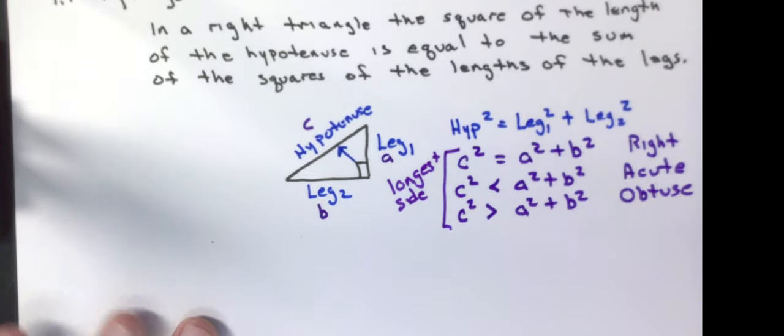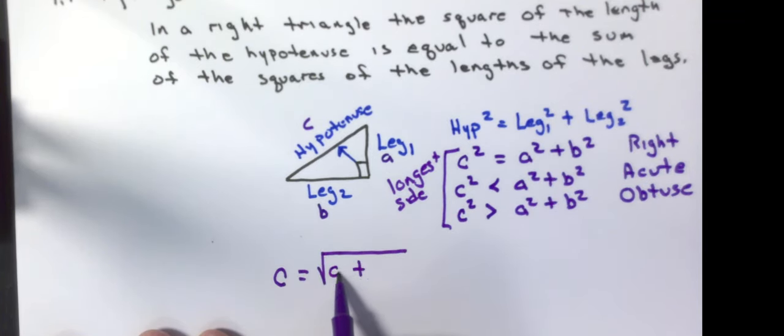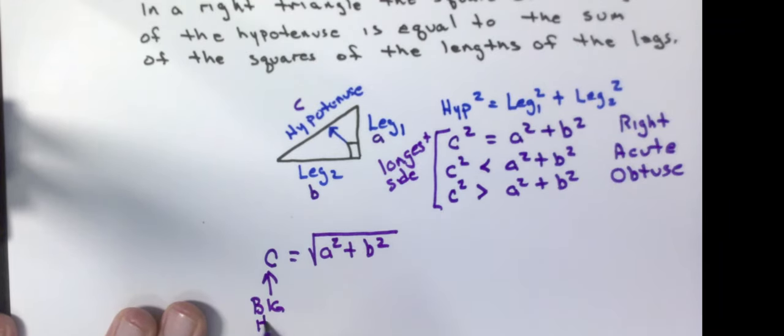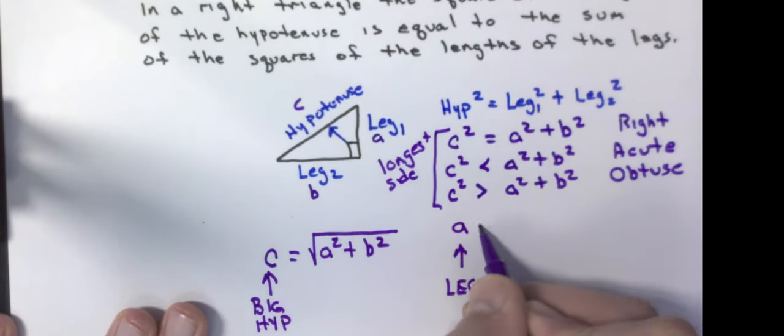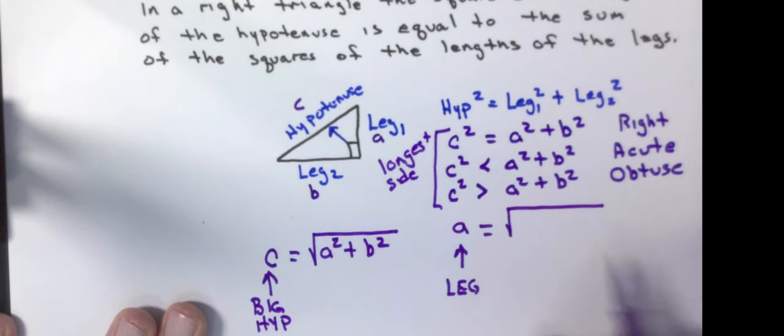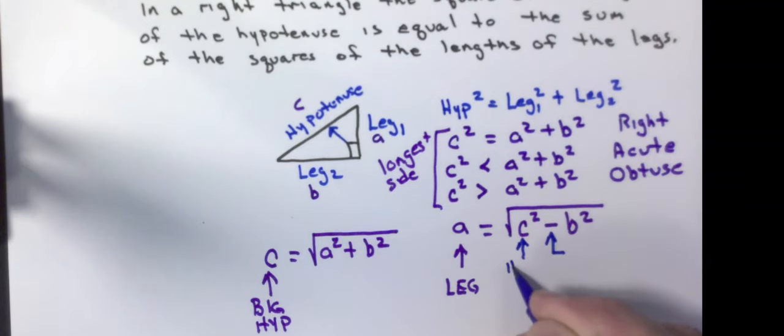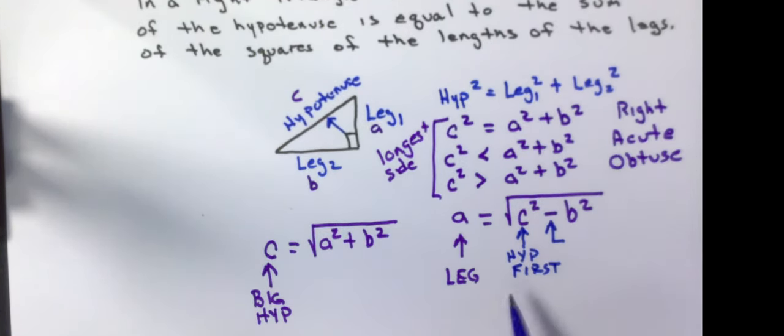Where it comes into play for us is if we are solving for C, or the longest side, it's going to be the square root of the sum of the squares. If we're solving for the hypotenuse. If we're solving for a leg, so I'm going to call it A, we're still going to be taking the square root, but we're going to be taking it of the hypotenuse squared minus the other leg squared. So if you're solving for a leg, there is a minus sign here, and the hypotenuse always comes first. And it doesn't matter if I'm solving for leg B, I could just rearrange the letters here, and I get C squared minus A squared.